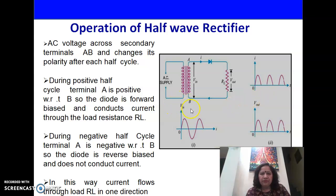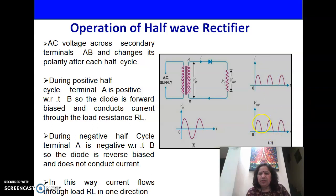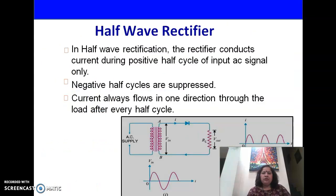In this way, current flows through the load resistance RL only in one direction. You can see the output waveform — this is the input waveform for your half-wave rectifier and this is the output waveform, showing both the output voltage and current waveforms. For one cycle there is output, and for the other — the negative half-cycle — there is no output. The half-wave rectifier conducts current only during the positive half-cycle; negative half-cycles are suppressed.